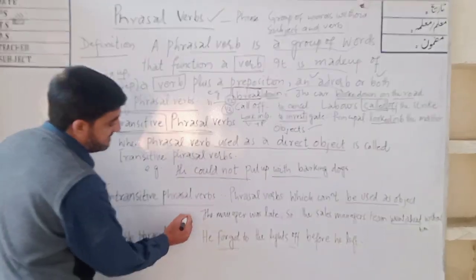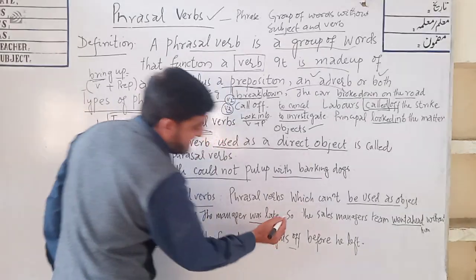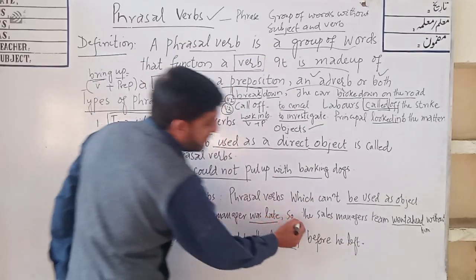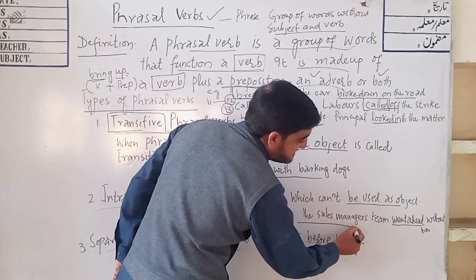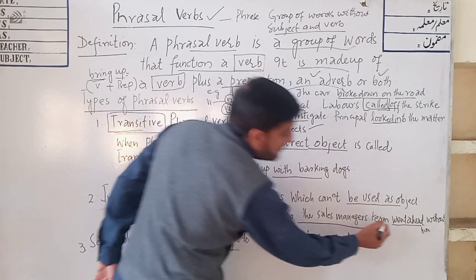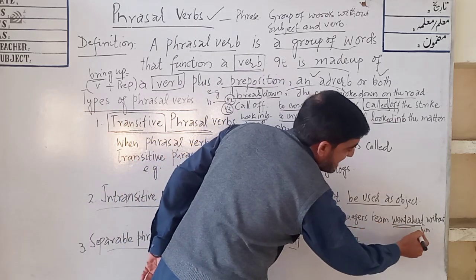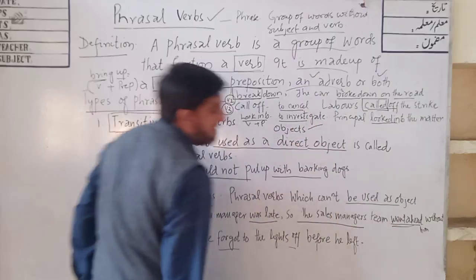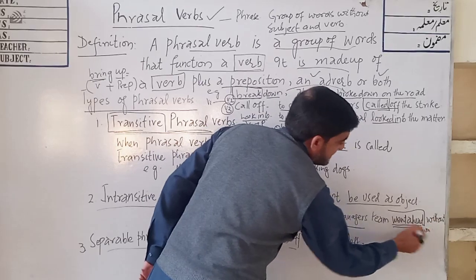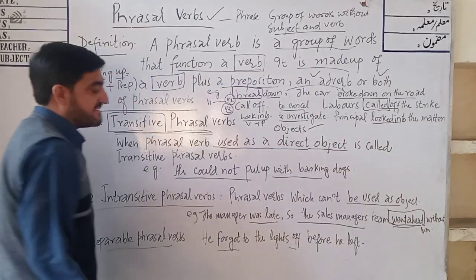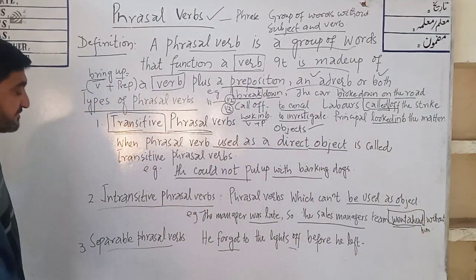Intransitive phrasal verbs cannot be used with objects. For example, 'The manager left.' The sales manager's team went ahead without help. So this is known as an intransitive phrasal verb.